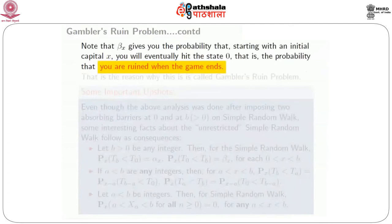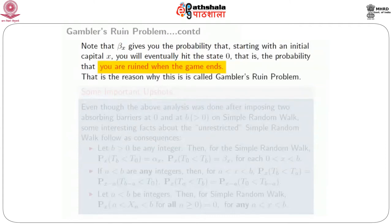Note that β_x gives the probability that starting with initial capital x, you will eventually hit state 0 — meaning you are completely broke when the game ends. This is the reason this particular problem is often called the Gambler's Ruin problem: it characterizes the probability that the gambler would be eventually ruined.